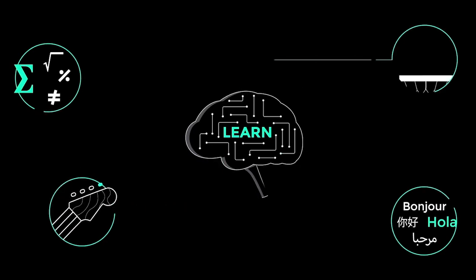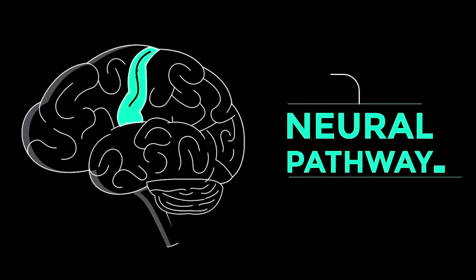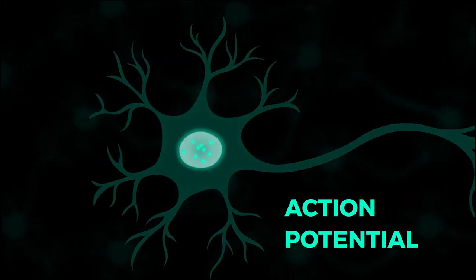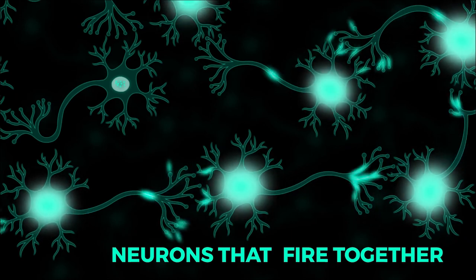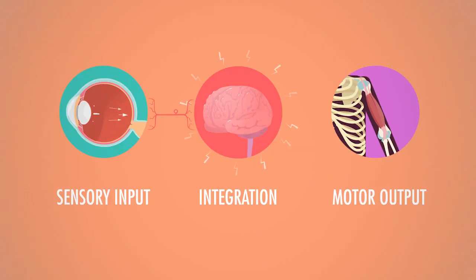How do neurons talk to each other? Through electrical signals that pass from one neuron to another. Imagine a spider walking onto your bare knee. The sensory receptors on your skin detect those eight little legs.